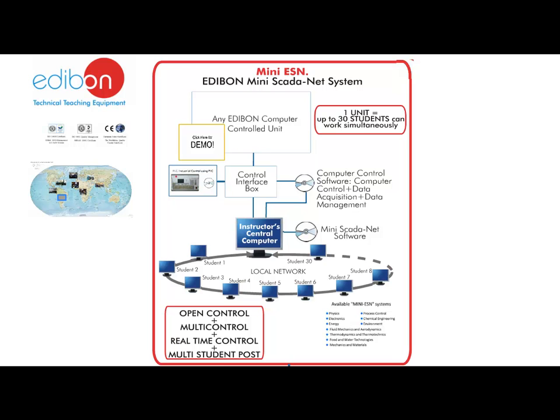This diagram will help explain how this system works. For a Mini-ESN system, the system controls only one unitary process. The system consists on the adaptation of any Edibon computer control unit with Escada integrated in a local network.